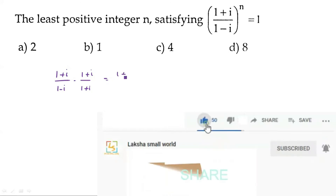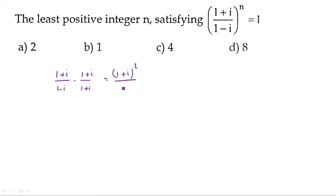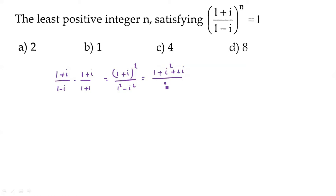Numerator becomes (1+i)² and denominator is (a+b)(a-b) = a²-b² = 1²-i². So numerator is 1 + i² + 2i divided by 1-i². Since i² = -1, denominator is 1-(-1) = 2. Numerator: 1-1+2i = 2i. So 2i/2 = i. Therefore (1+i)/(1-i) = i.